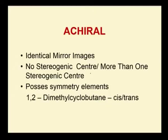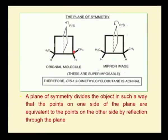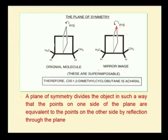To explain the plane of symmetry, we take the example of cis-1,2-dimethylcyclobutane. The methyl groups are substituted at positions 1 and 2. If I pass a plane on this molecule, the first methyl group is reflected — the mirror image and original molecule appear similar. Again, if I bisect the plane, I get the methyl group reflected, which means these are superimposable. Therefore, cis-1,2-dimethylcyclobutane is an achiral molecule, not a chiral molecule.